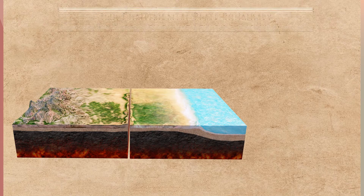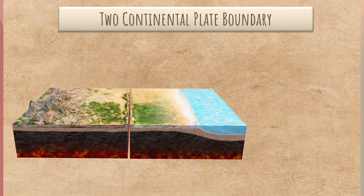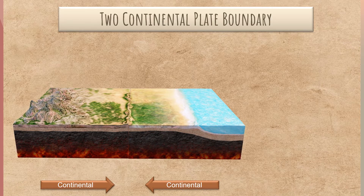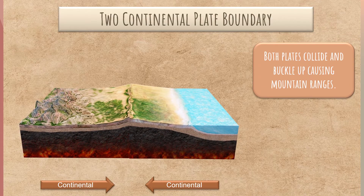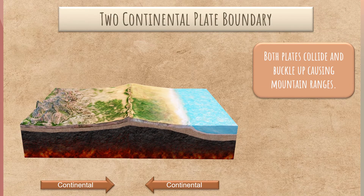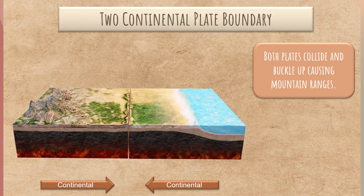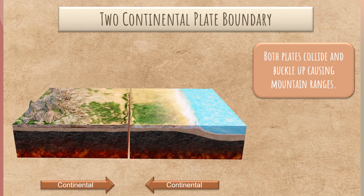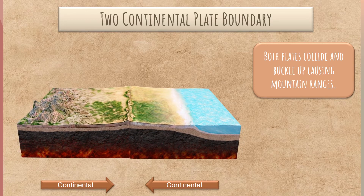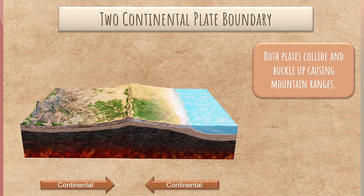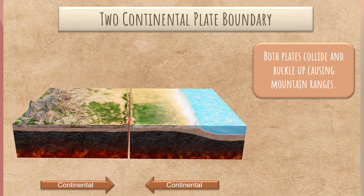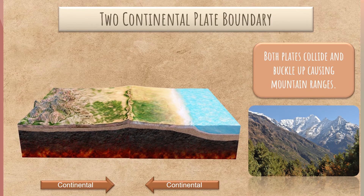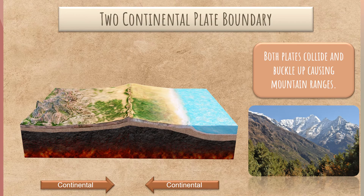The third type of convergent boundary is the two continental plate boundary. When two continental plates collide, a collision zone is formed. Both plates collide and buckle up, causing mountain ranges. Unlike the other two types of convergent boundaries, subduction ceases for this particular type. Therefore, no trench, no volcano, and definitely no island arc are created. Instead, what is created is a large group of tall mountains called a mountain range. The best example is the Himalayas, wherein the Indian plate and Eurasian plate collide.